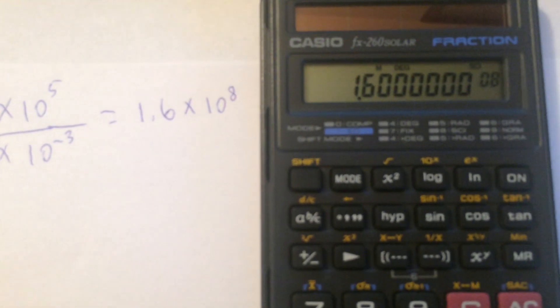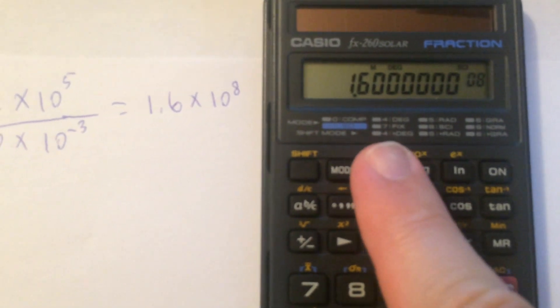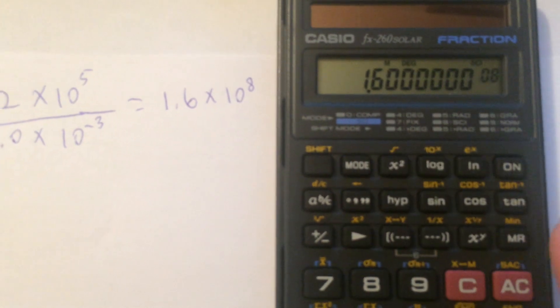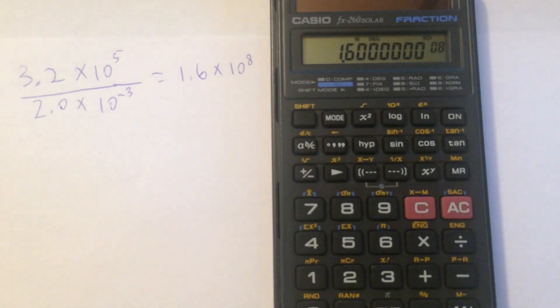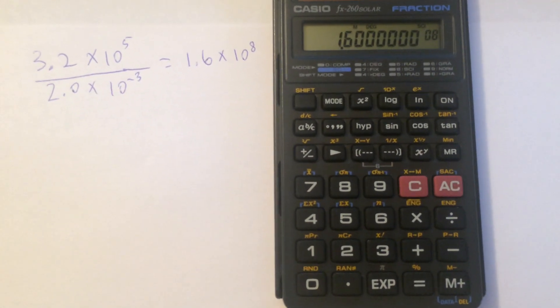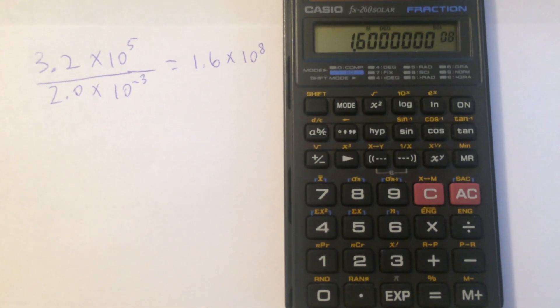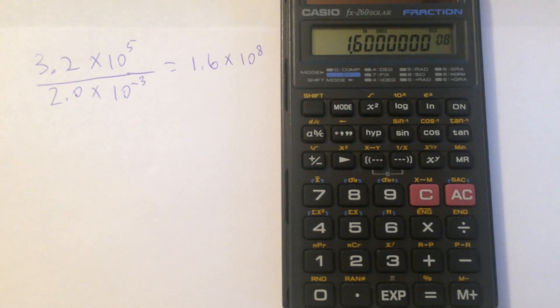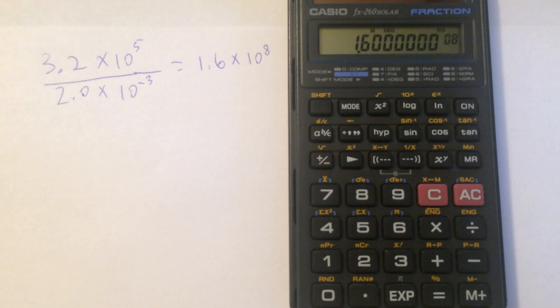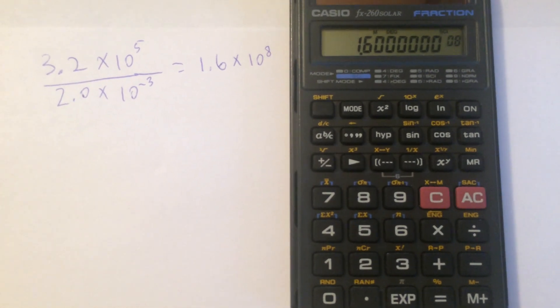you can see it's re-expressing the number we had as 1.6 times 10 to the eighth. Now, it added a bunch of zeros there. This kind of calculator does not do significant figures properly, but at least we've got the answer in scientific notation. And if we know that it needs two sig figs, we can use that.